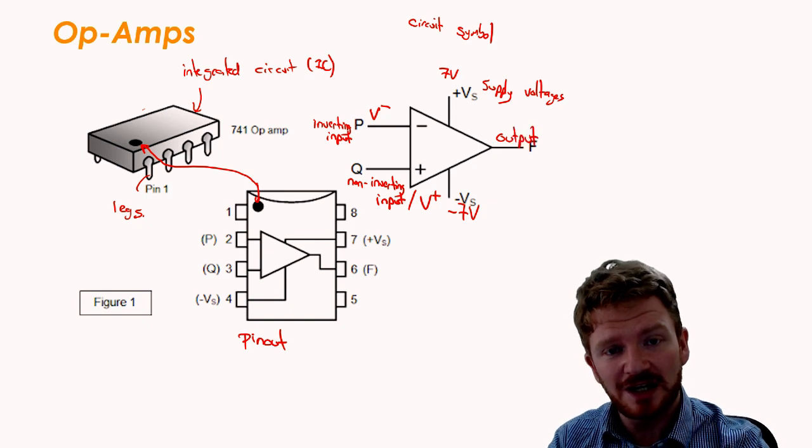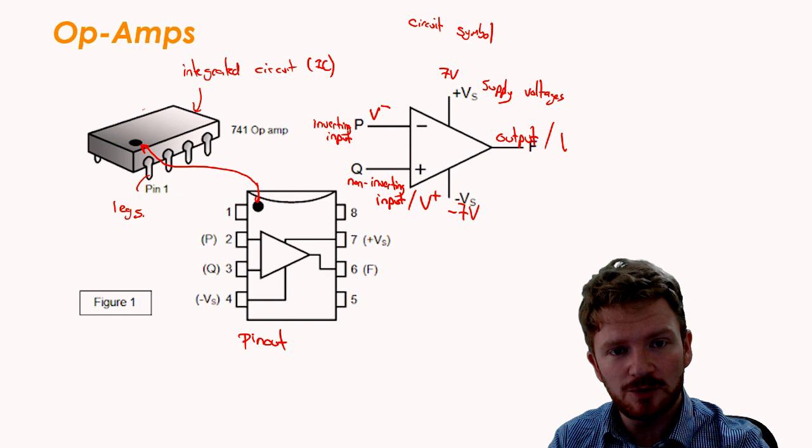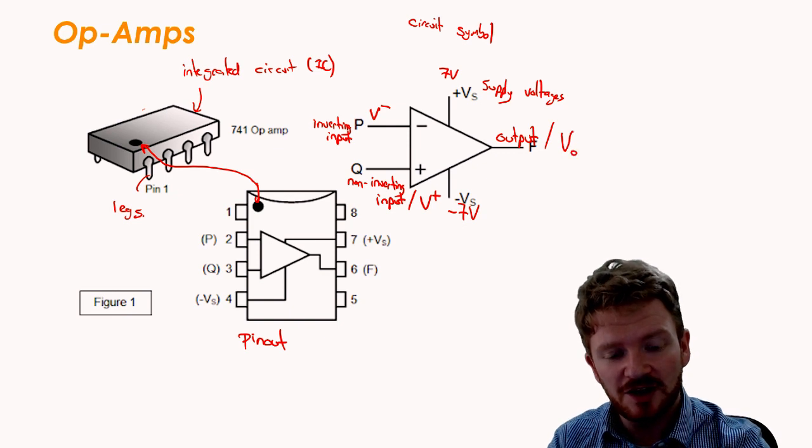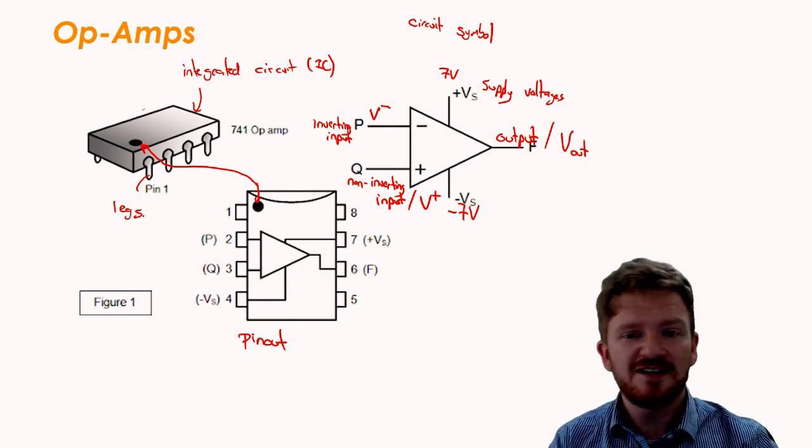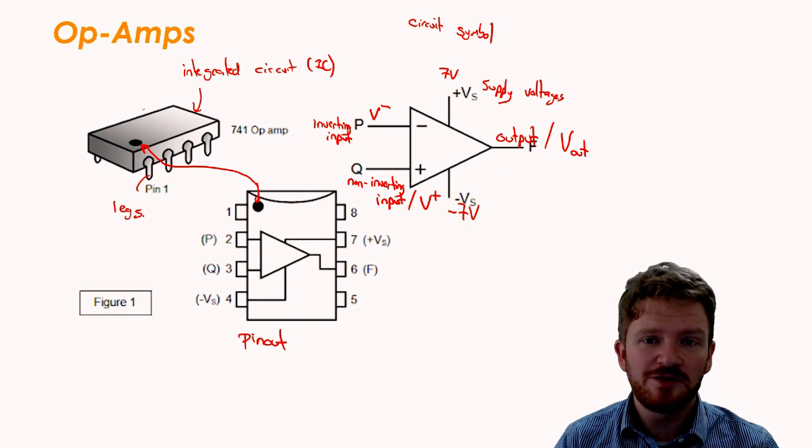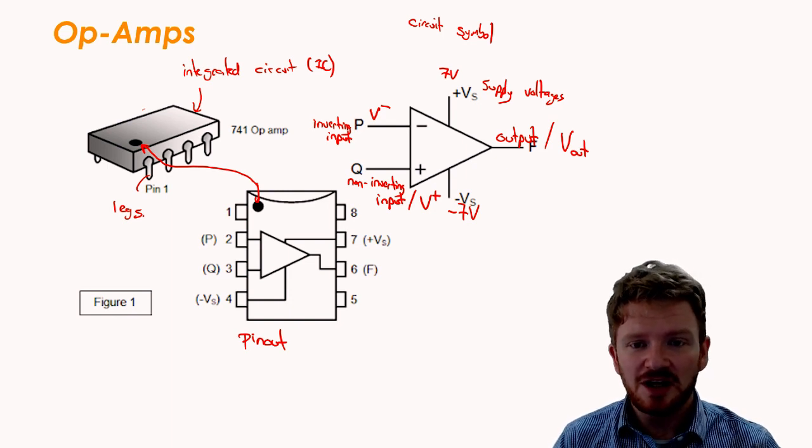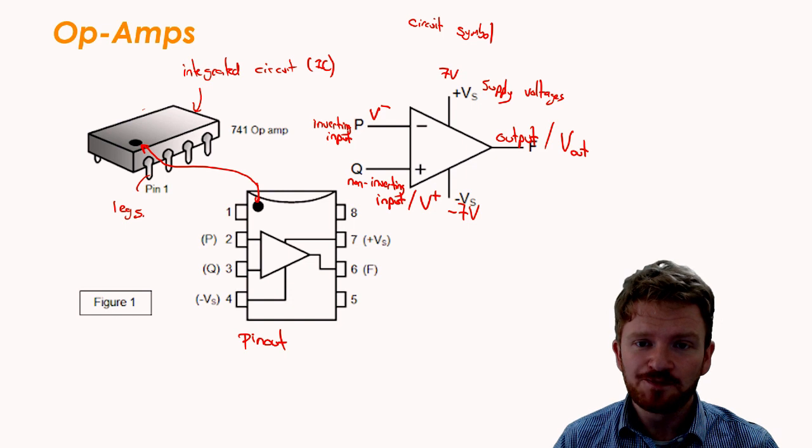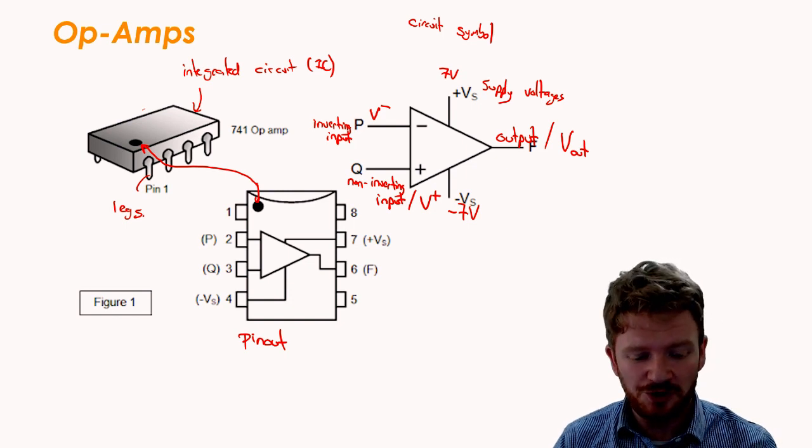And then, at the end here, we have the output. That's what's coming out of my comparator. We often give it the symbol V and then a subscript out. It sounds a bit petty, but you have to get all of these different superscripts and subscripts correct, and the correct terms when you're talking about these.